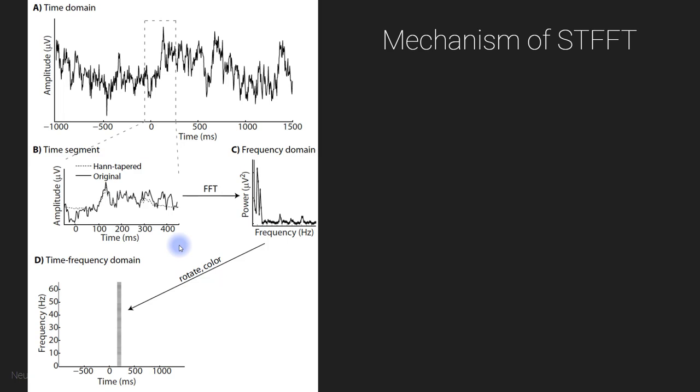One interesting difference between the short-time Fourier transform and wavelet convolution is with wavelet convolution, we build up the time-frequency plane one frequency at a time for all time points. And here with short-time Fourier transform, we are building up the time-frequency plane one time point at a time or one time chunk at a time, over all frequencies. So we get all frequencies at once, and then we're looping over the different time points.